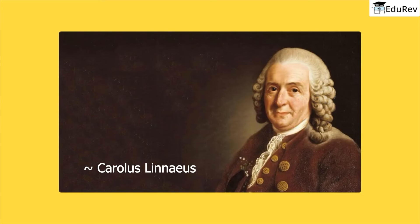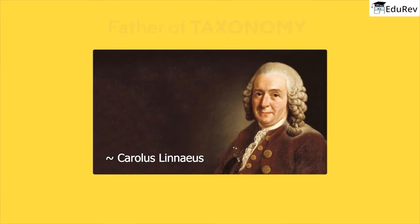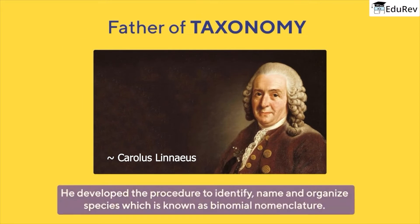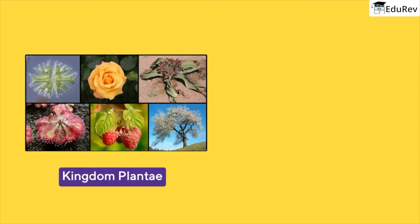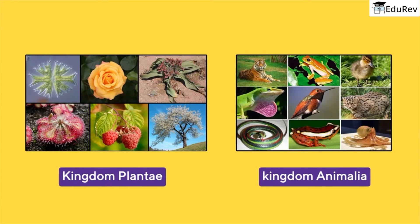The man behind this genius concept is Carolus Linnaeus. Carolus Linnaeus is considered the father of taxonomy. He developed the procedure to identify, name, and organize species, known as binomial nomenclature, and he also classified all the organisms into Kingdom Plantae and Kingdom Animalia.